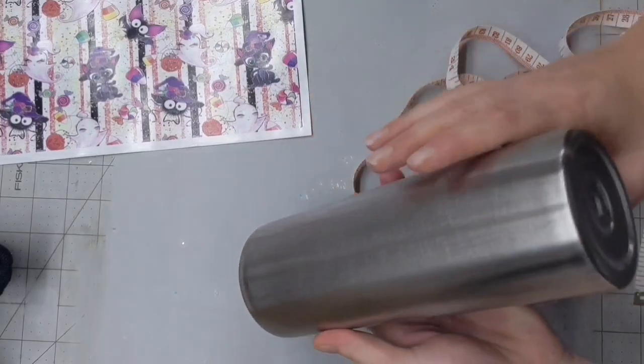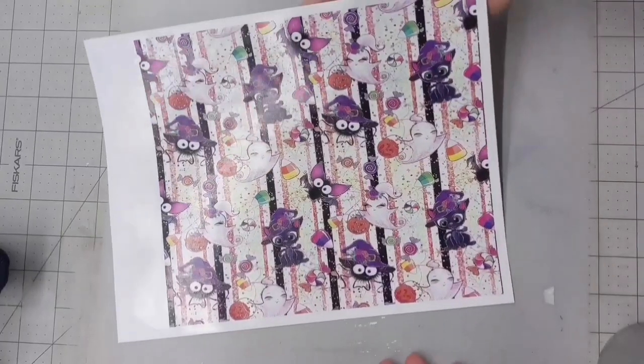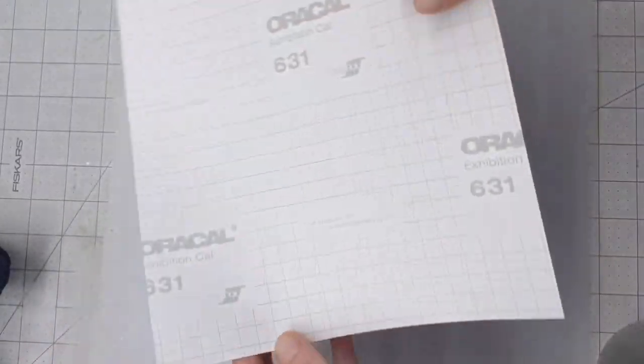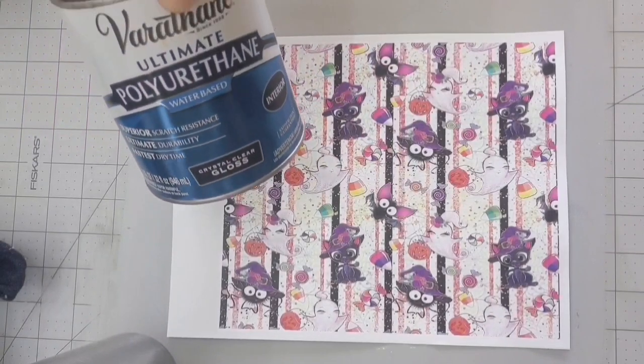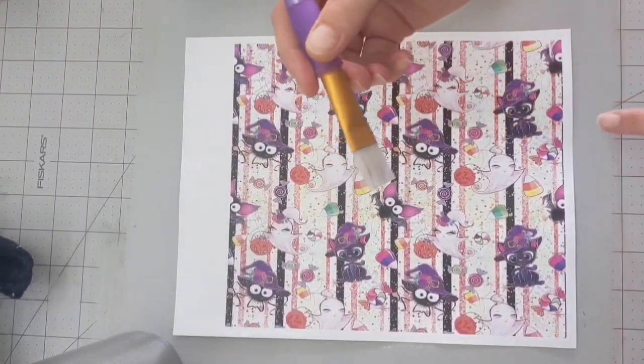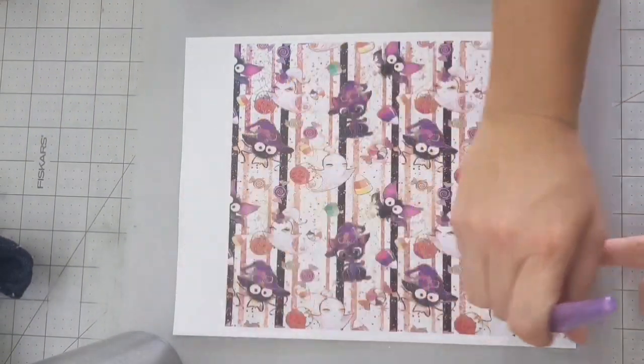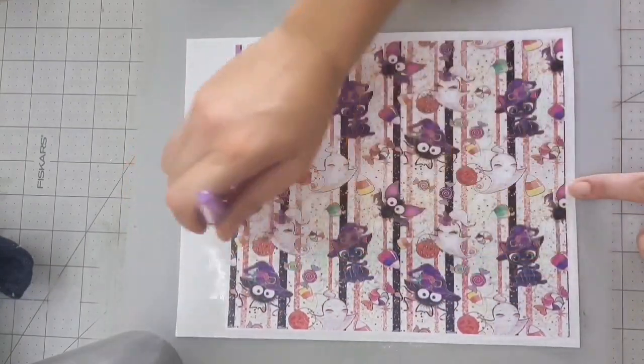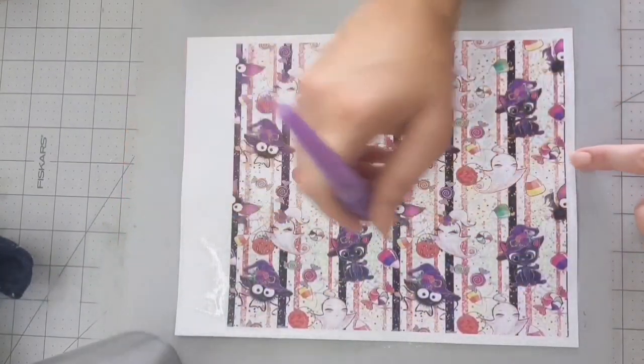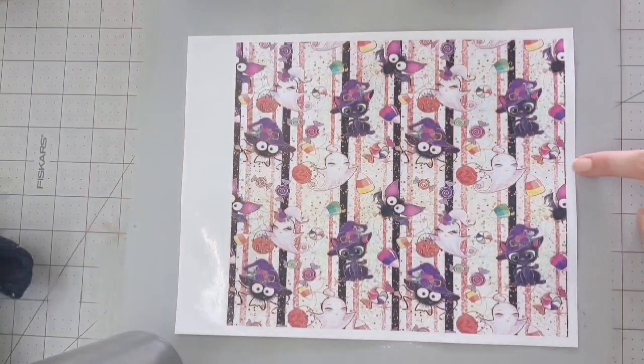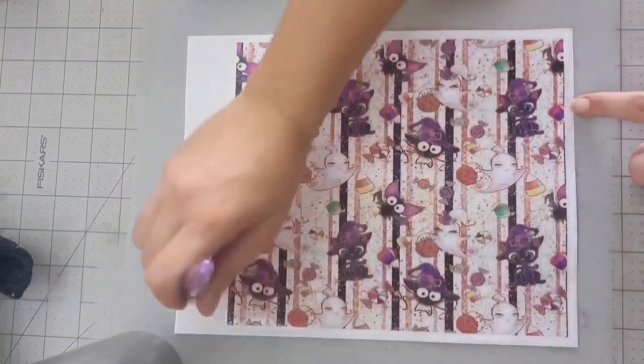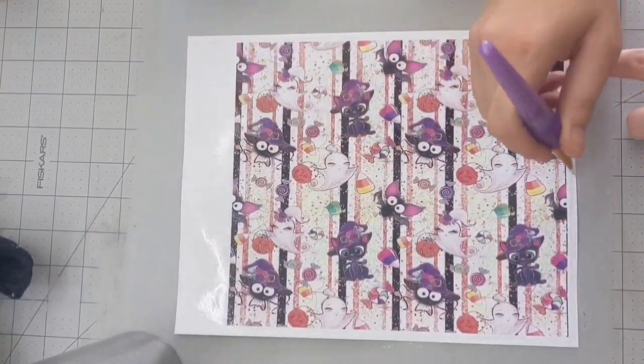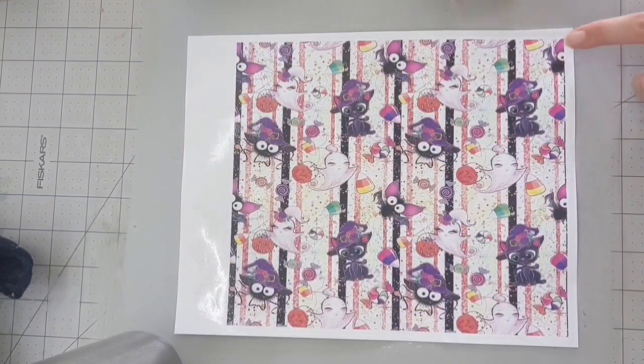I'm using 631 removable vinyl in a matte white. It doesn't have to be removable but it does have to be matte white if you're printing it with your laser printer. Once I printed it on the vinyl I am sealing it with water-based polyacrylic and I feel like this is just a bit stronger than a spray sealant.